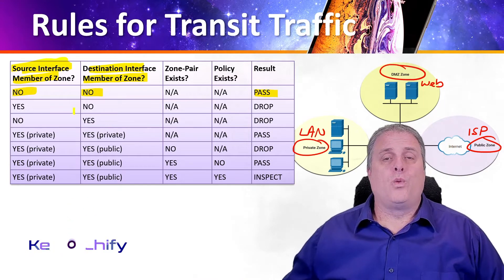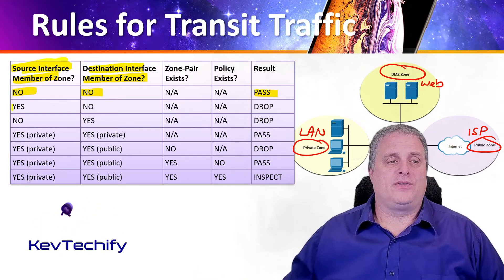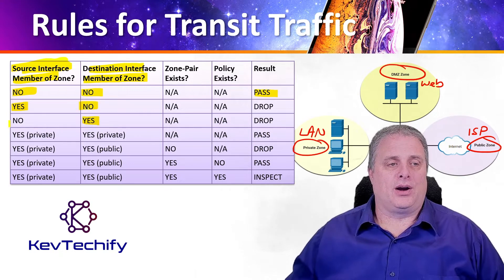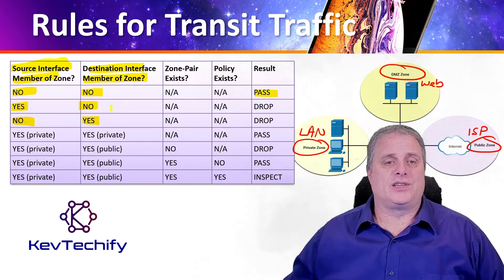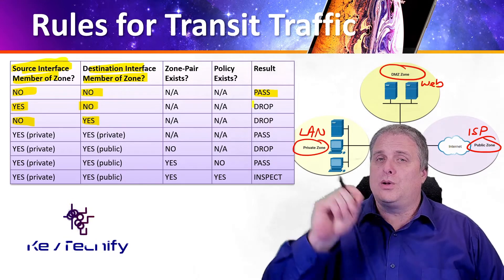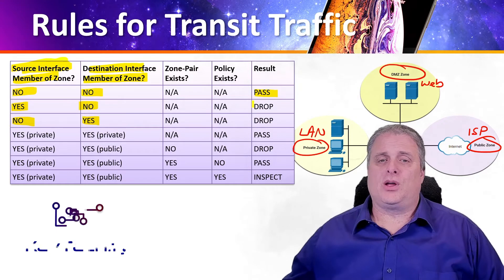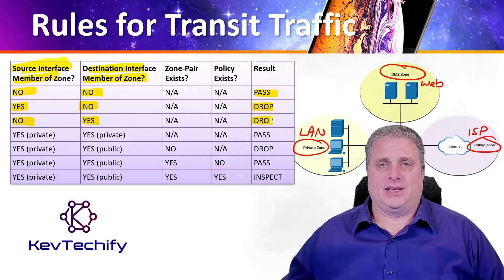If one of those interfaces is part of a zone and the other is not — so the source is part of a zone but the destination interface is not, or vice versa — because one belongs to the zone and one doesn't, we are going to drop those packets.